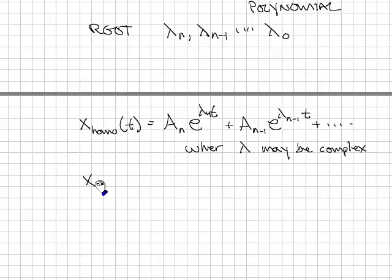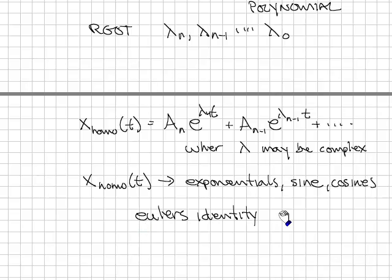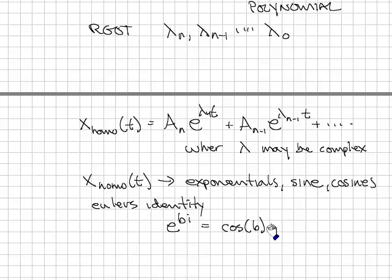The solution is a combination where lambda may be complex. That means that x_homogeneous of t will be made up of exponentials, sines, cosines. That follows directly from Euler's identity, which is e^(bi) equals cosine b plus i sine of b. We'll discuss this more later.